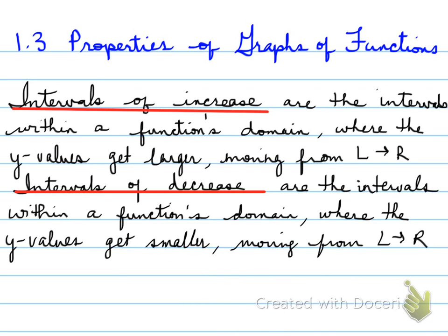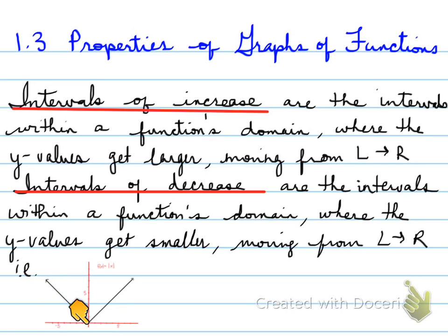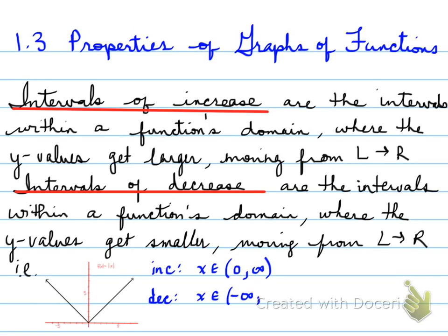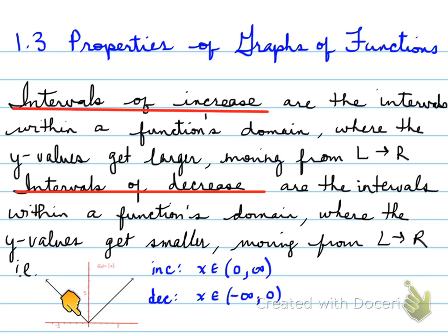Another example: from 1.2, we looked at an absolute function. Looking at this absolute function, you can see that moving from left to right, the y values are decreasing. And over here, as we move from left to right, the y values are increasing. So the graph is increasing from 0 to infinity, and decreasing from negative infinity up to 0.